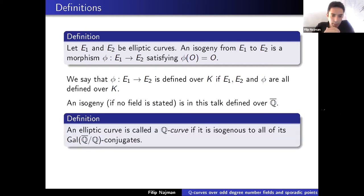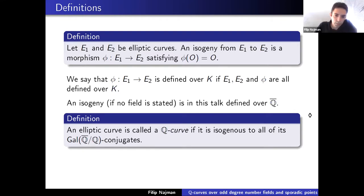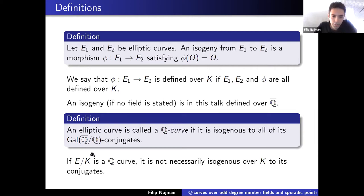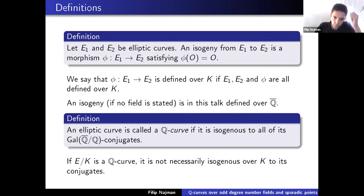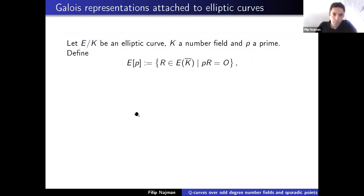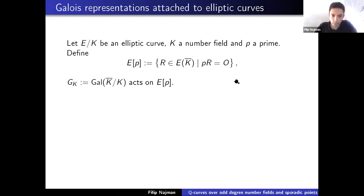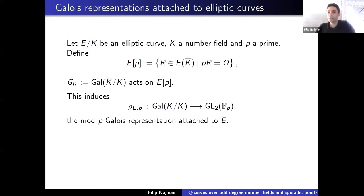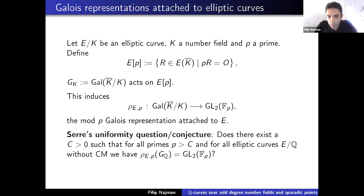The object we will be studying are Q-curves. An elliptic curve is called a Q-curve if it is isogenous to all of its Galois conjugates — importantly, only over the algebraic closure, not necessarily over K itself. If we have an elliptic curve over a number field K and a prime p, the absolute Galois group acts on the p-torsion group of E, inducing a mod-p Galois representation attached to E.